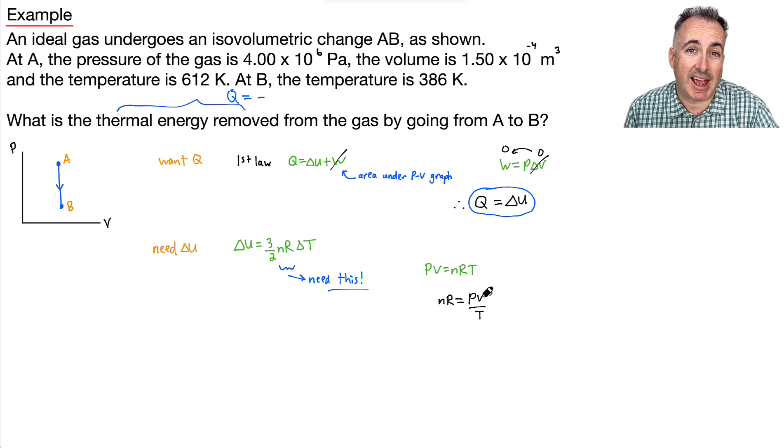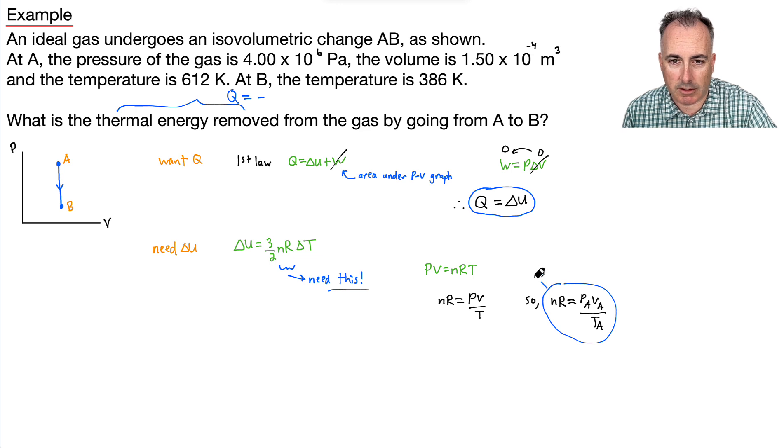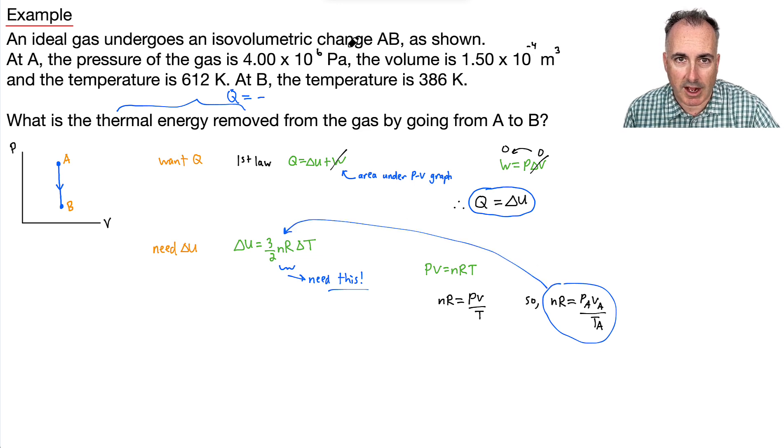Well, that means if we know P and V and T at a certain point, that's going to be constant no matter what. And we do know it at A. So do you see what we're going to do here? We're going to say that N times R is going to be equal to PA VA over TA. So that's going to be a piece right here that we're going to put in here. And therefore, we're pretty much ready now.